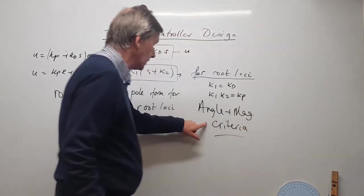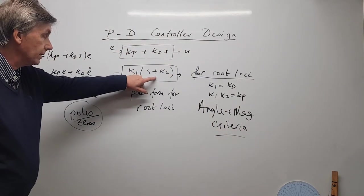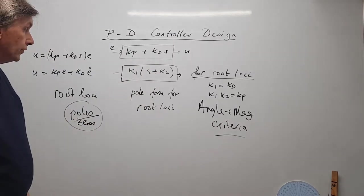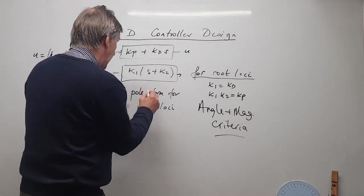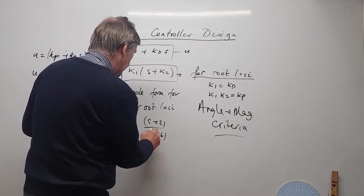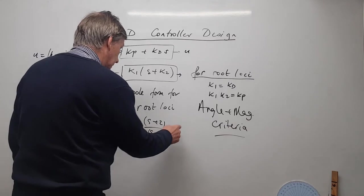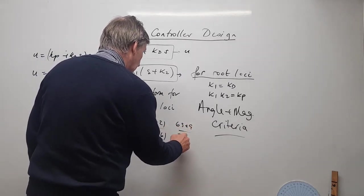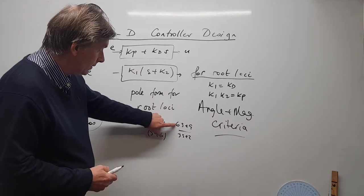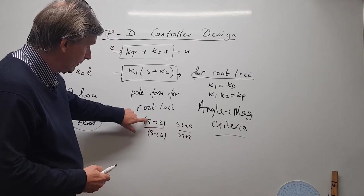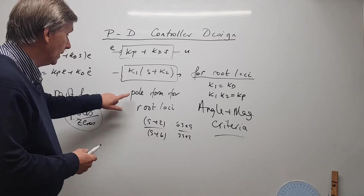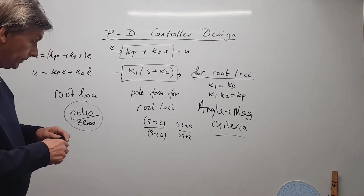Root locus and the angle and magnitude criteria demand that transfer functions are in pole-zero format. For example, (s+2)/(s+6) is in pole-zero format, but (4s+9)/(3s+2) is not, because there are numbers in front of the s terms. You must factor out those numbers so there is a leading coefficient of one in every factor for the pole-zero format required by root locus.